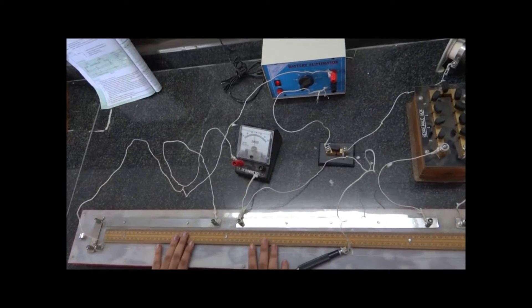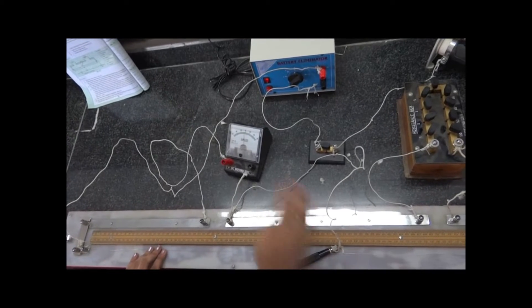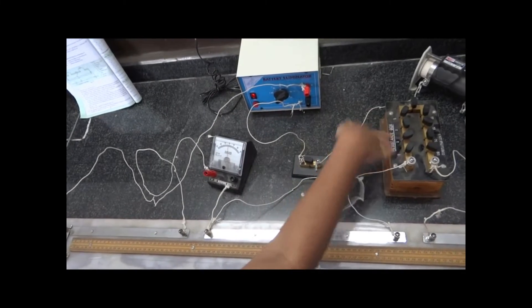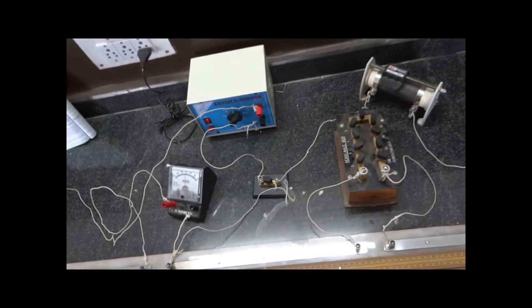The apparatus required is Wheatstone meter bridge, galvanometer, battery eliminator, plug key, resistance box, rheostat, and jockey.